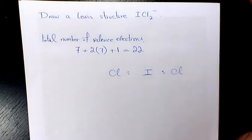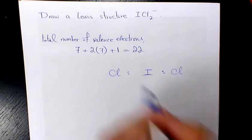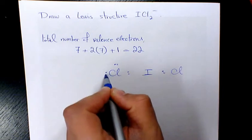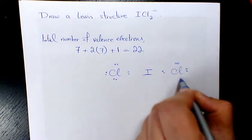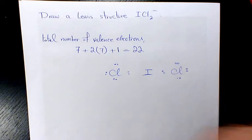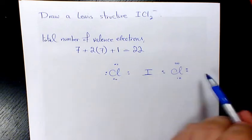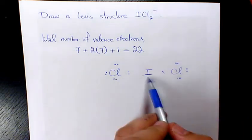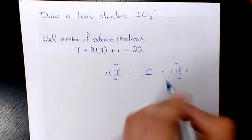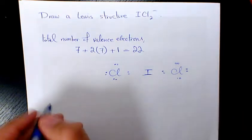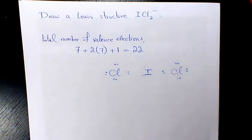Then I need to place pairs of the remaining valence electrons as lone pairs on the surrounding atoms — 1 2, 1 2, 1 2, 1 2, 1 2, 1 2 — only on the surrounding atoms, because these two chlorines are the surrounding atoms and iodine is the central atom.